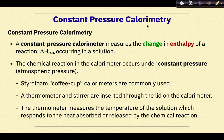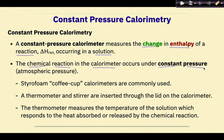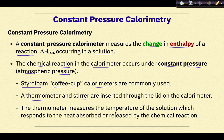Constant pressure calorimetry. A constant pressure calorimeter measures the change in the enthalpy of a reaction, which we represent as delta H reaction, occurring in a solution. The chemical reaction in the calorimeter occurs under constant pressure, so atmospheric pressure. Typically styrofoam coffee cup calorimeters are used. A thermometer and a stirrer are inserted through the lid in the calorimeter. The thermometer measures the temperature of the solution, which responds to the heat either absorbed or released by the chemical reaction that occurs within the calorimeter.